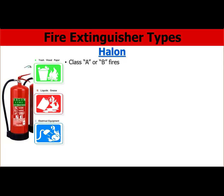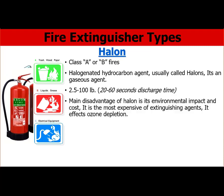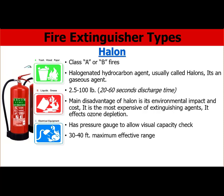The last type is Halon, used for Class A and Class B fires. It uses a halogenated hydrocarbon agent — it's a gaseous agent. It usually comes with 2.5 to 100 lbs and takes 20 to 60 seconds of discharge time. The main disadvantages of Halon are its environmental impact and high cost — it is the most expensive extinguishing agent and affects ozone depletion, so it is banned by most countries and used only under very specific conditions. It has a pressure gauge and an effective range of approximately 10 to 14 feet. It also extinguishes by smothering, like DCP, CO2, and foam.